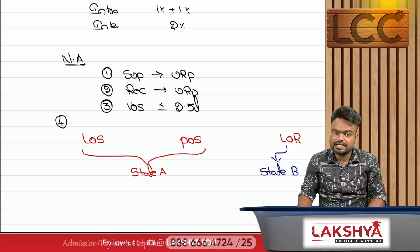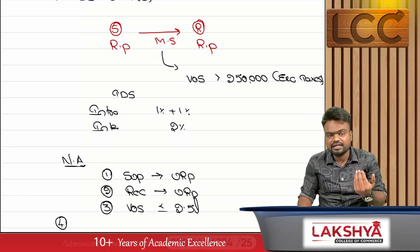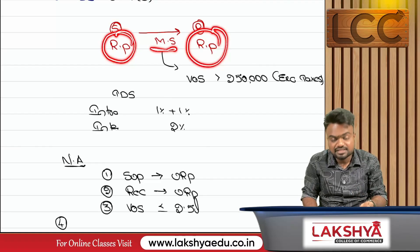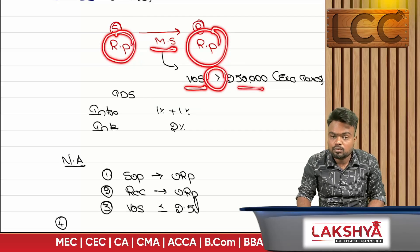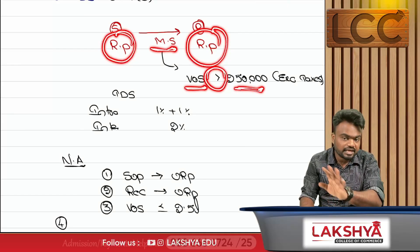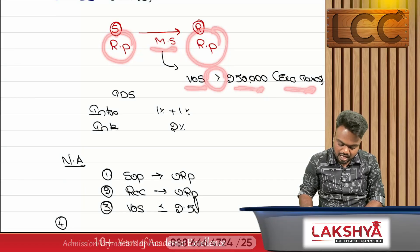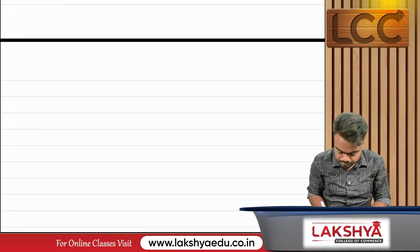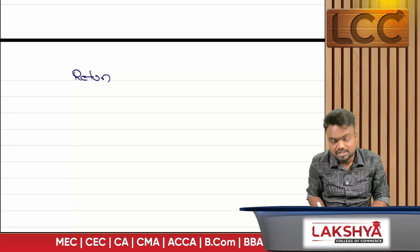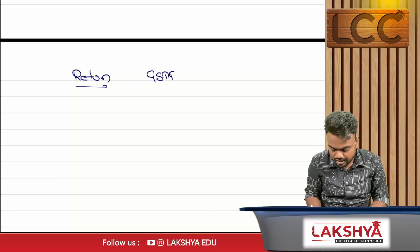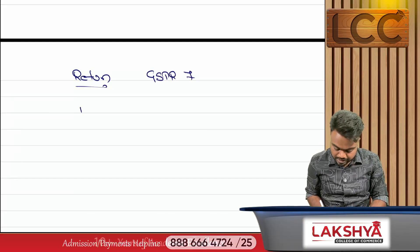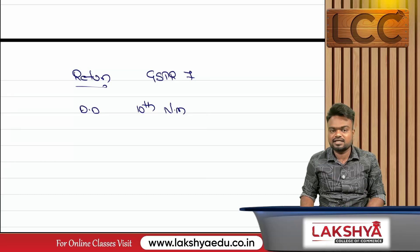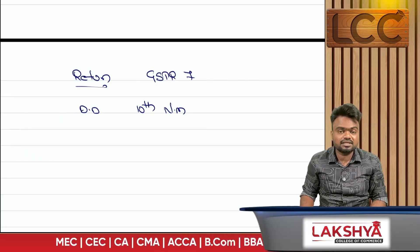To summarize TDS applicability: TDS applies when the supplier is a registered person, the recipient is a registered person, the transaction is metal scrap, and the value is more than 2.5 lakhs under one contract, excluding taxes. The rate is intra-state 1%+1%, inter-state 2%. The GST return to be filed is GSTR-7, and the applicable due date is the 10th of the next month.